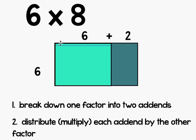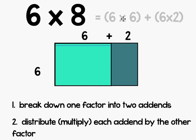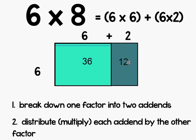Now I know that in order to find the area of the larger rectangle, I can actually add the areas of these two smaller rectangles together. I broke apart one factor into two add-ins and I'm going to multiply them each individually to get the area of the larger rectangle. So instead of doing six times eight, I'm going to do six times six plus six times two. Six times six is 36 and six times two is 12, so 36 plus 12 gives me 48 — the same product. I broke apart the factor into two add-ins, six plus two, then distributed the six to each of them, and finally added them together.